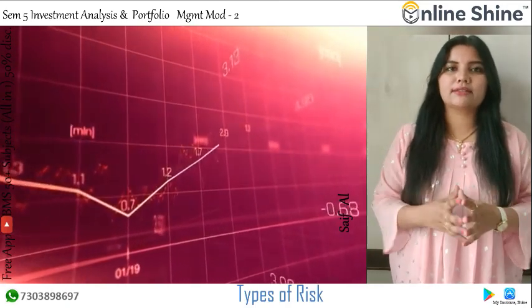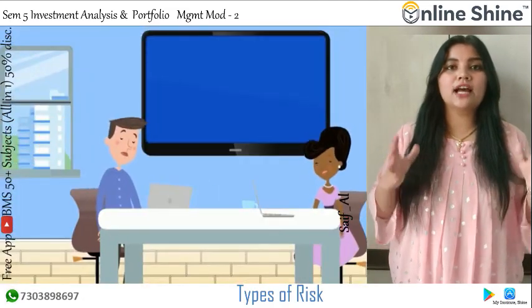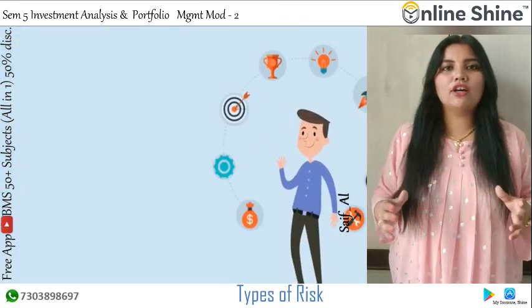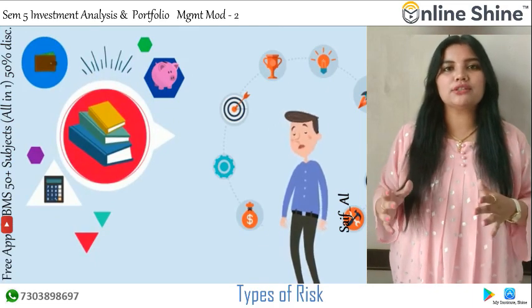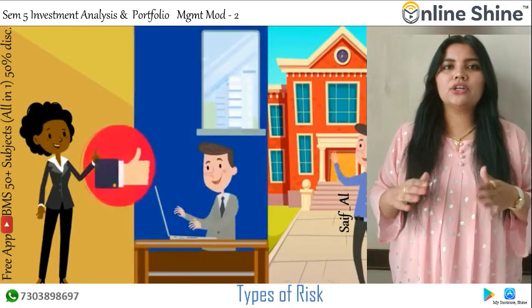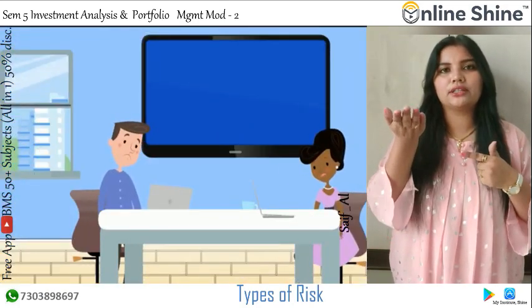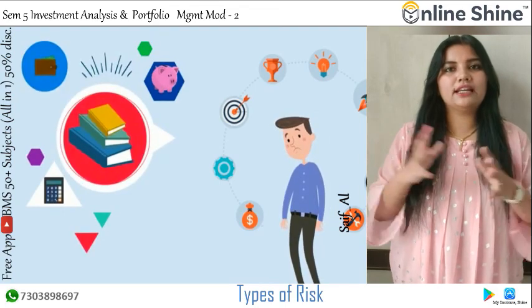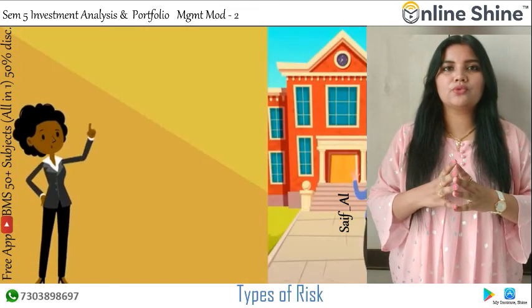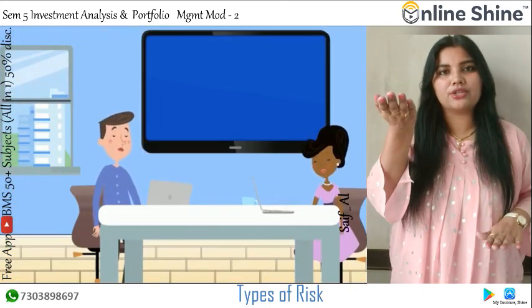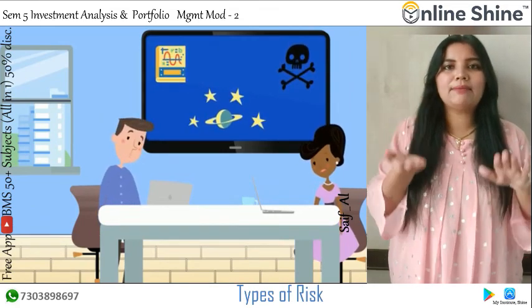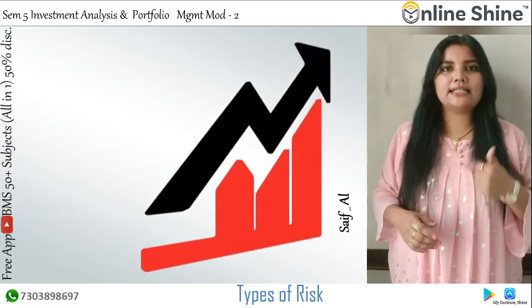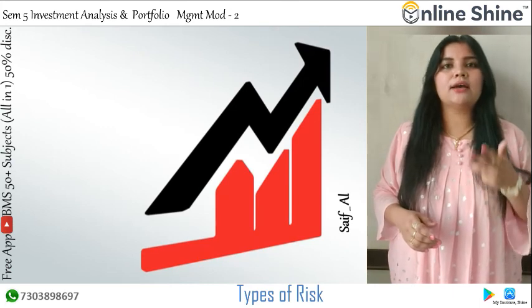Market risk is a type of systematic risk where prices of any particular shares move up or down consistently for some time periods in line with other shares in the market. A general rise in share prices refers to a bullish trend, whereas a general fall in share prices refers to a bearish trend. In other words, the share market moves between bullish and bearish phases. The market movements can be easily seen in the movement of share price indices such as the BSE Sensitive Index, BSE National Index, NSE Index, etc.